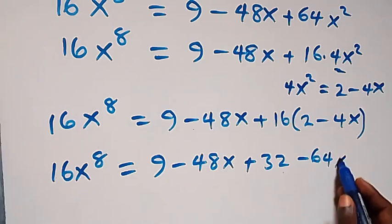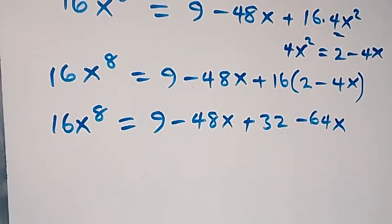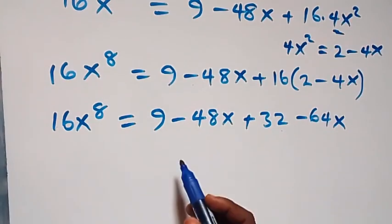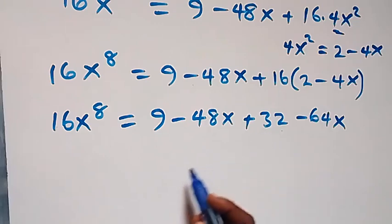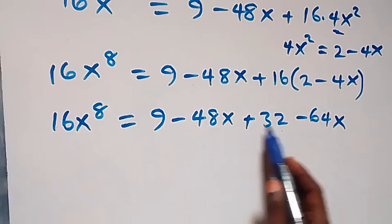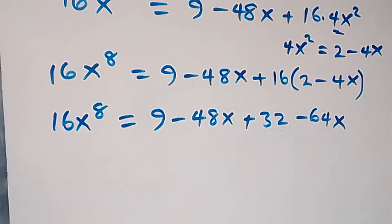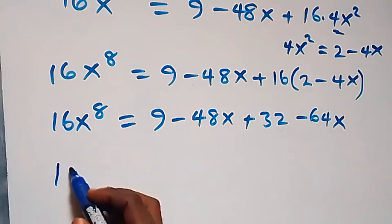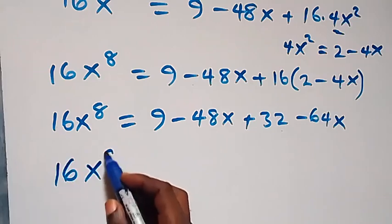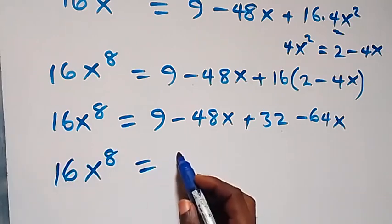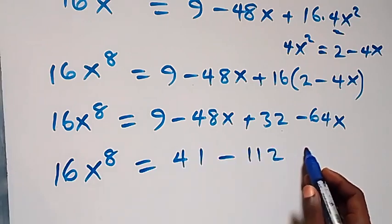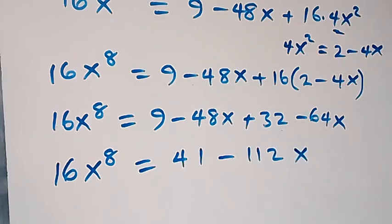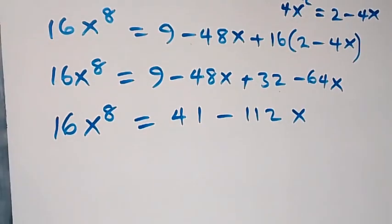Collecting the like terms together, we get 16x⁸ equals 41 minus 112x.